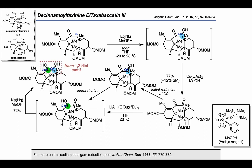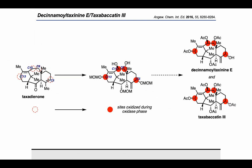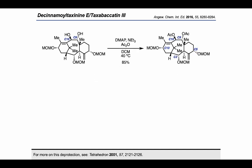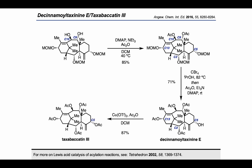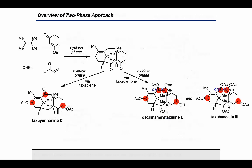Treatment with sodium amalgam reduced the ketone to provide a trans-1,2-diol motif at C9 and C10. With that, the authors had successfully developed a reaction sequence from taxadiene to the key intermediate, using selective oxidations to strategically form all carbon-oxygen bonds with the desired stereochemistry, to complete the syntheses of D-cinnamoyl taxanine E and taxibacadine 3. To finish these targets, they treated the intermediate with acetylation conditions to convert the C9 and C10 hydroxyl groups into acetates. Subjection to carbon tetrabromide and isopropanol removed the MOM groups, after which acetylation completed D-cinnamoyl taxanine E. A further acetylation using copper triflate converted the C5 alcohol into a fifth acetate group, completing the synthesis of taxibacadine 3.